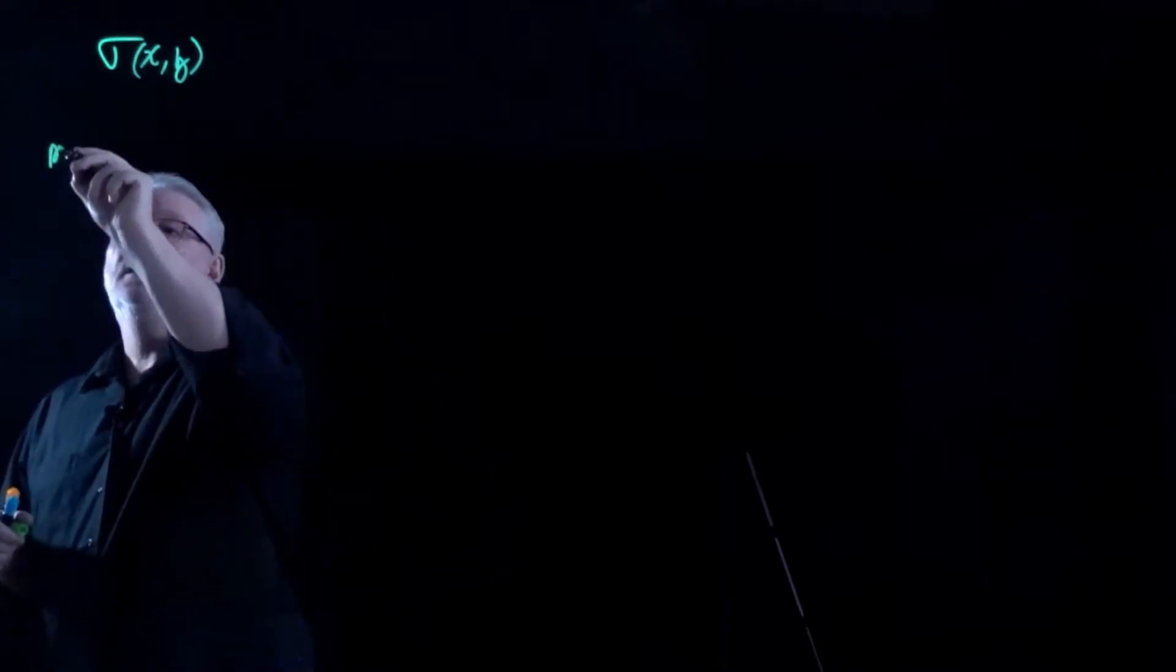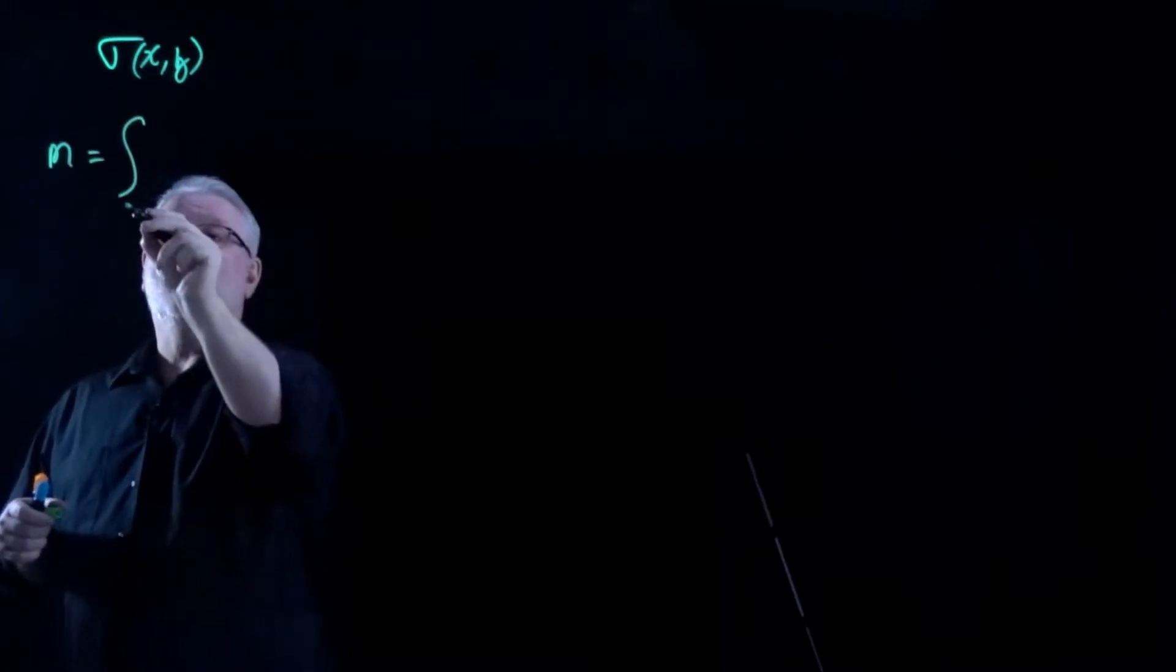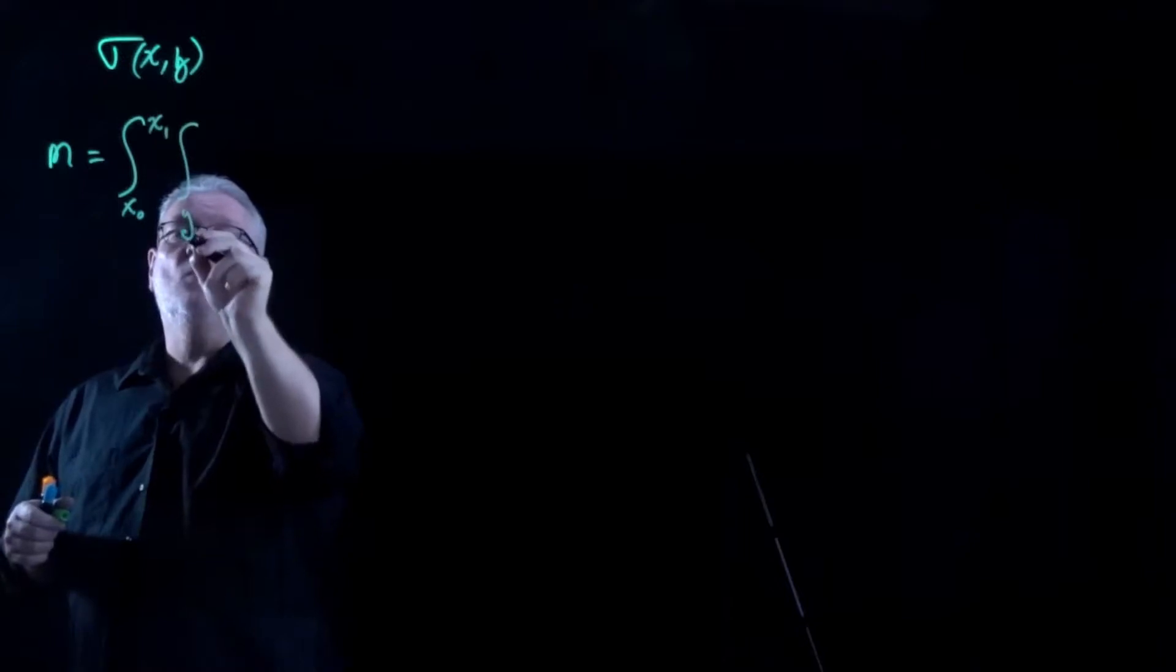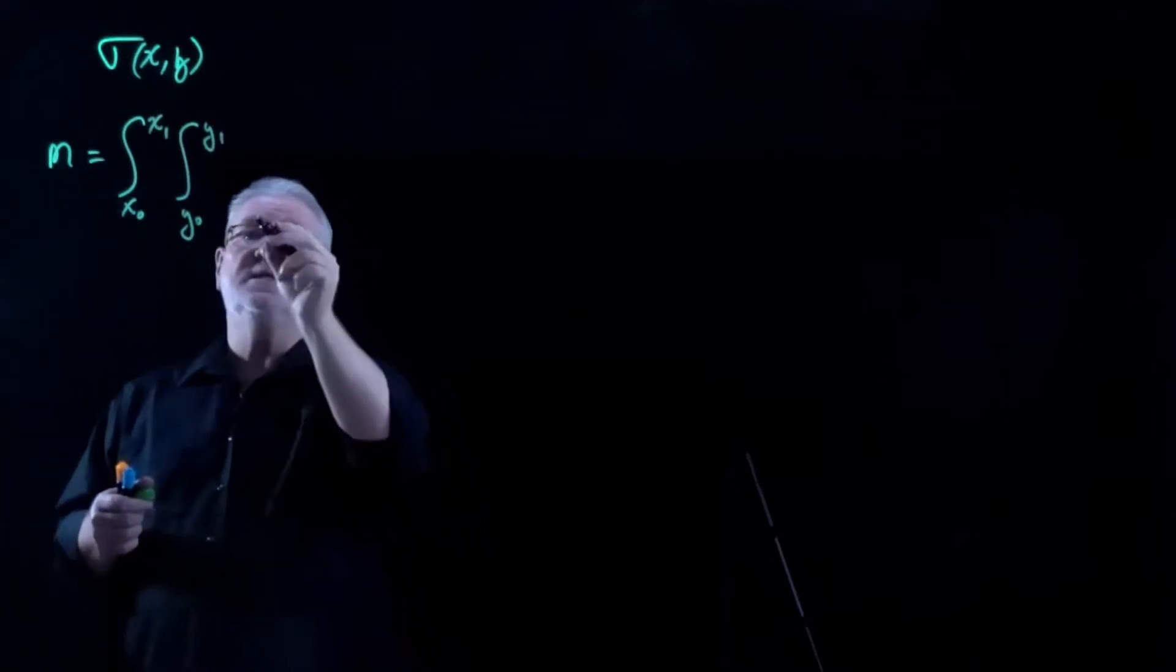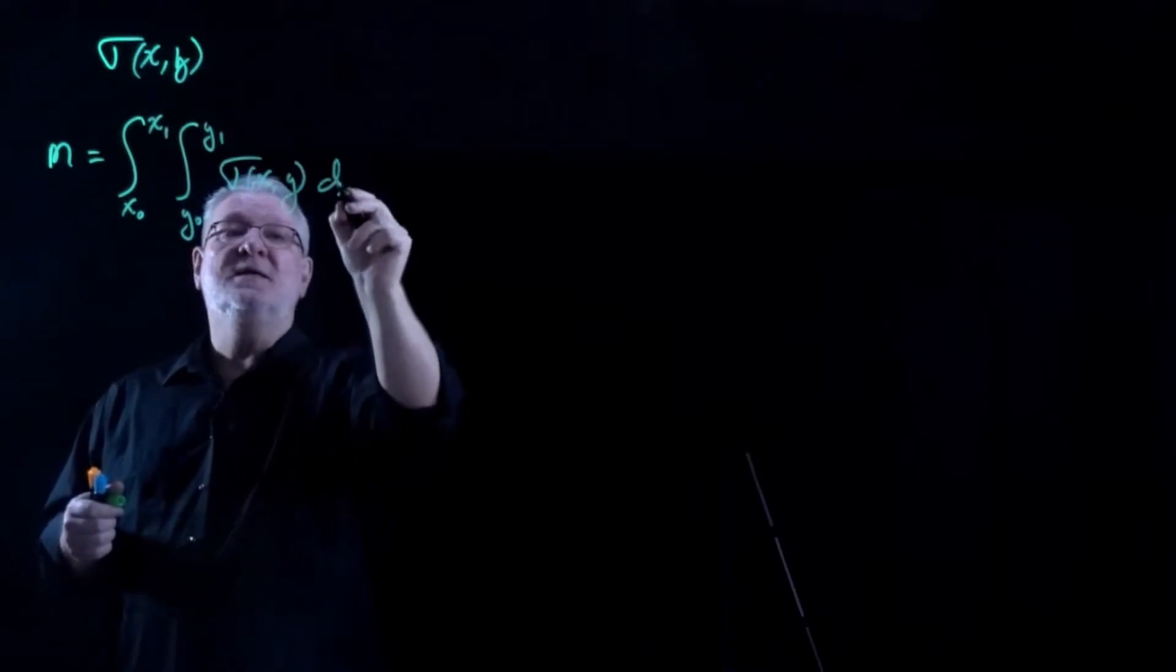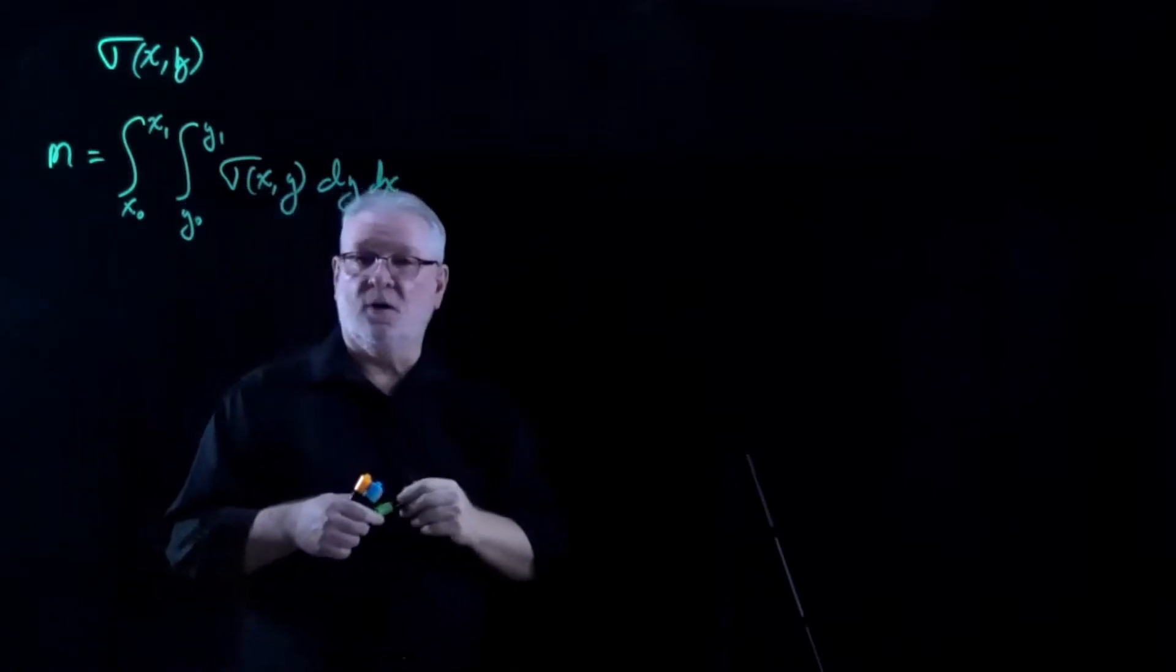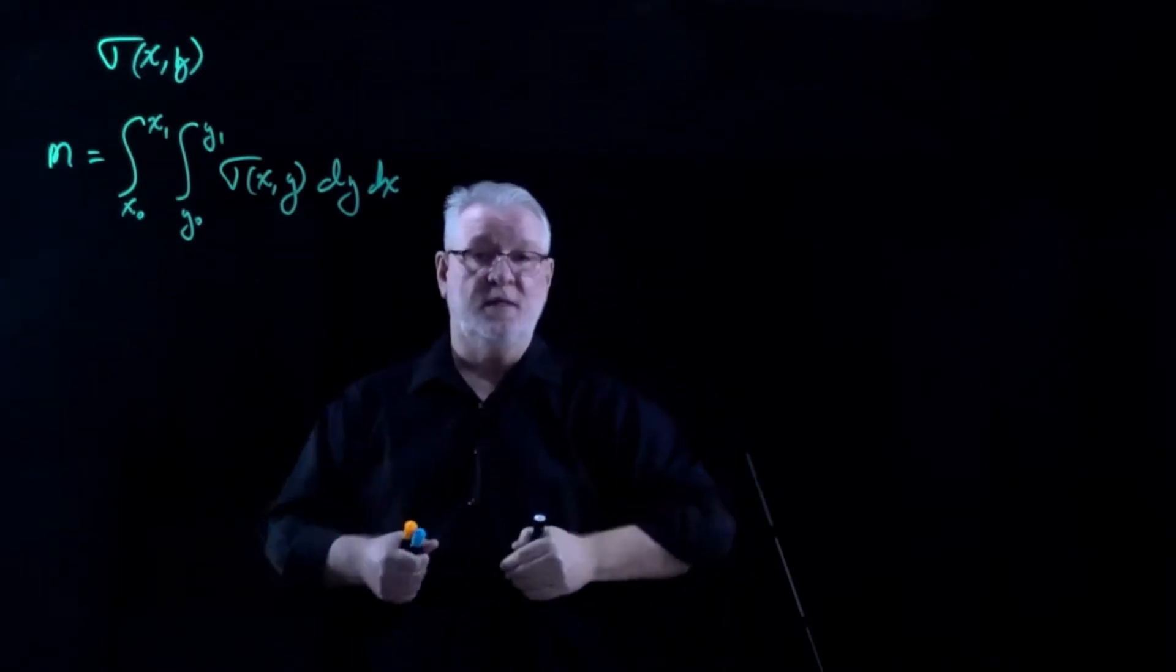The first integral we need to perform is to actually find the mass. And of course, finding the mass is going to be easy. I'll integrate over X from X naught to X1 and Y from Y naught to Y1. And all I have to integrate is the density function itself. The density function with respect to X and Y, dy dx. Once I perform that double integral, I'll actually know the total mass, the mass that's distributed around the entire area.